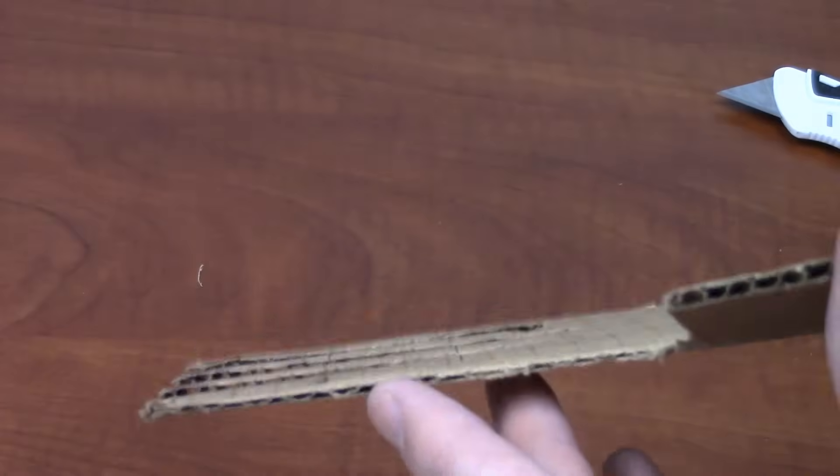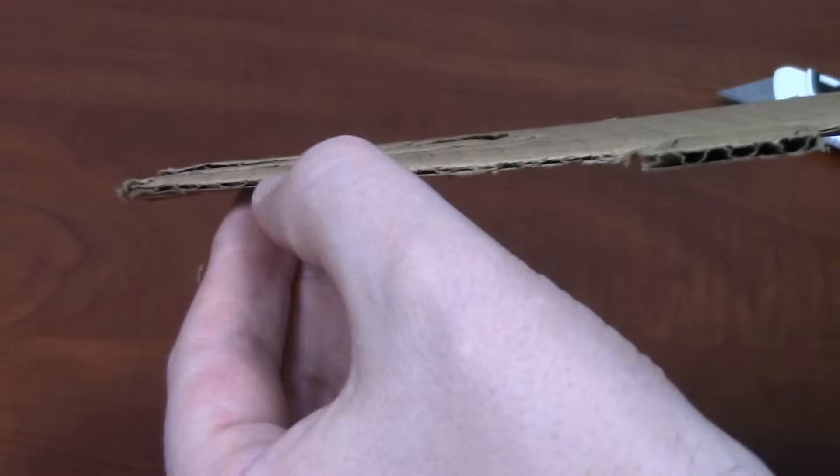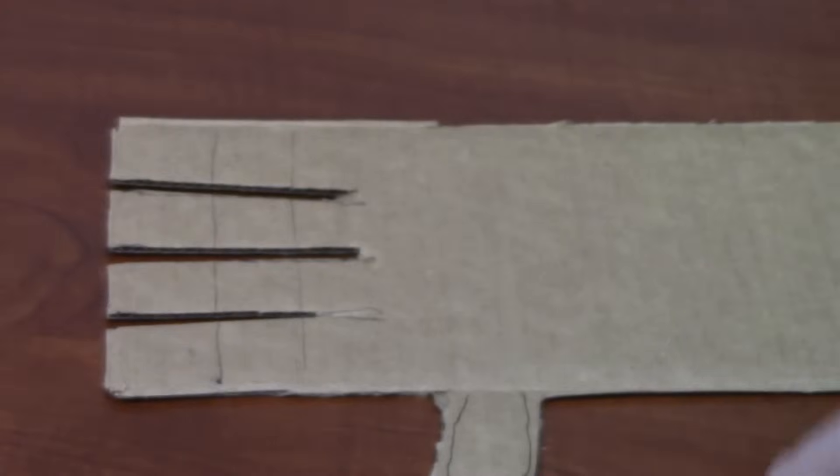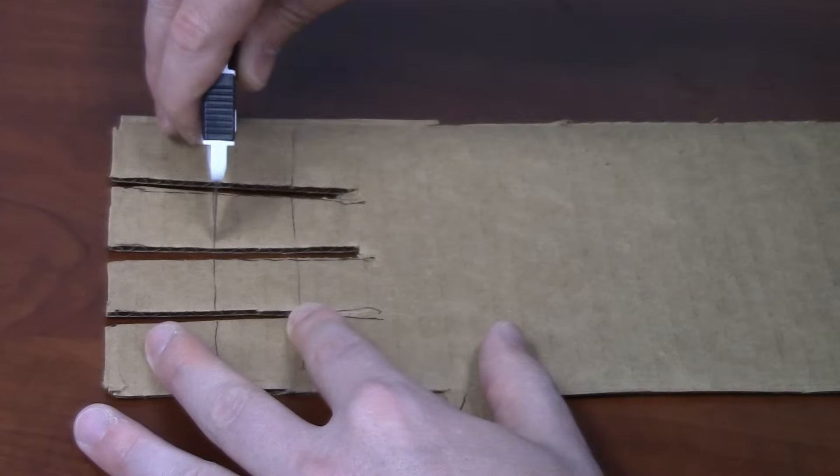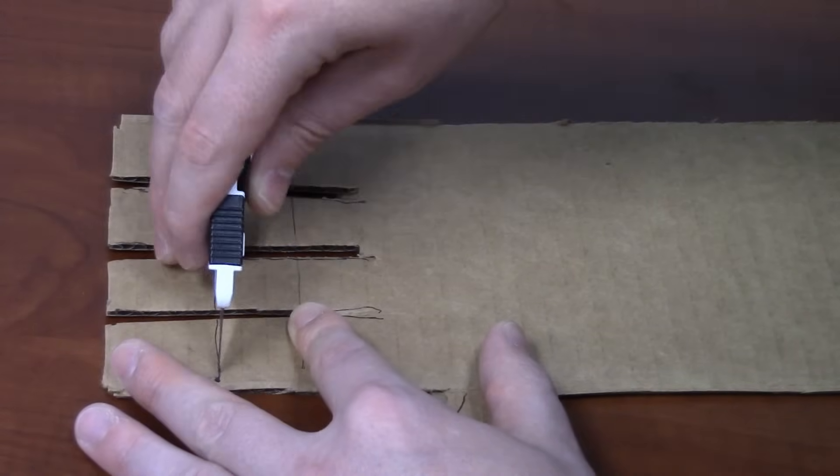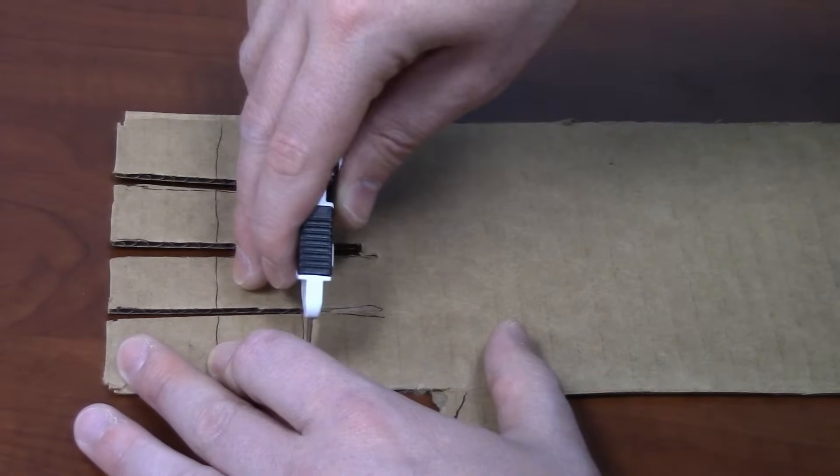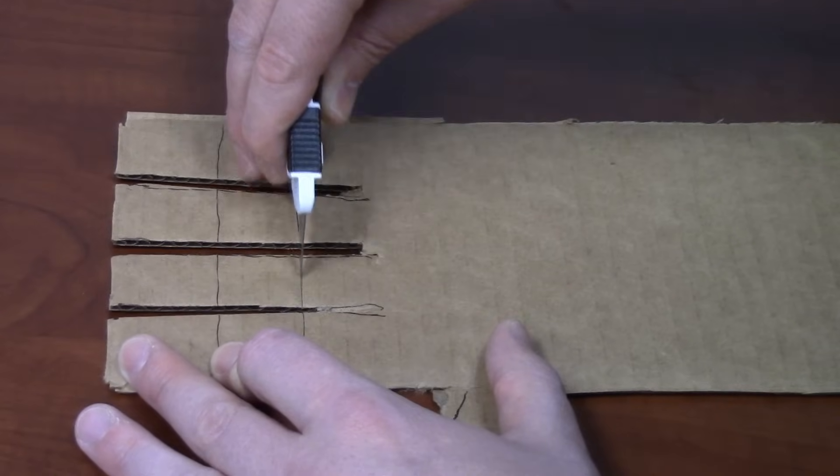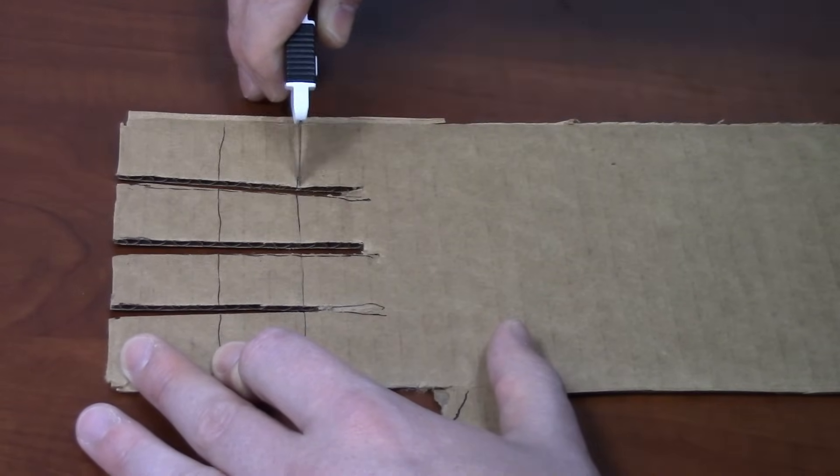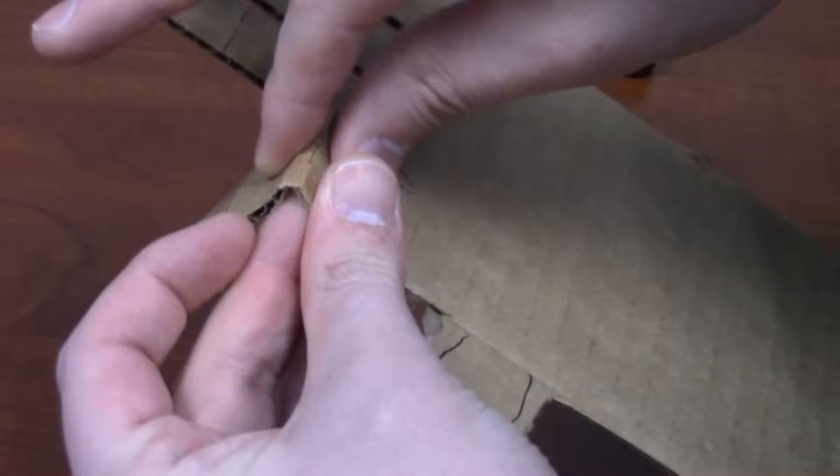As you can see, the cardboard's in layers. We don't want to go through the bottom layer, we just want to cut the top layer. Honestly, it'd probably be better to do this before cutting the fingers, and now we should be able to lightly bend each one at that point.